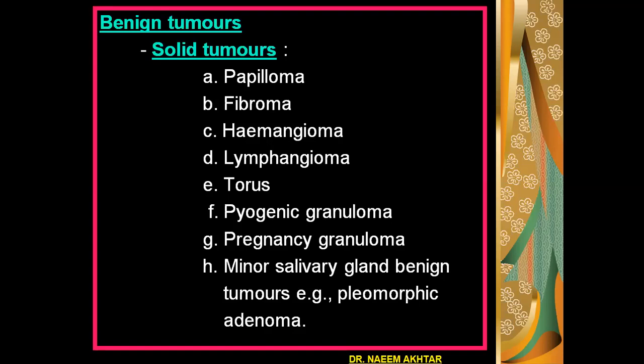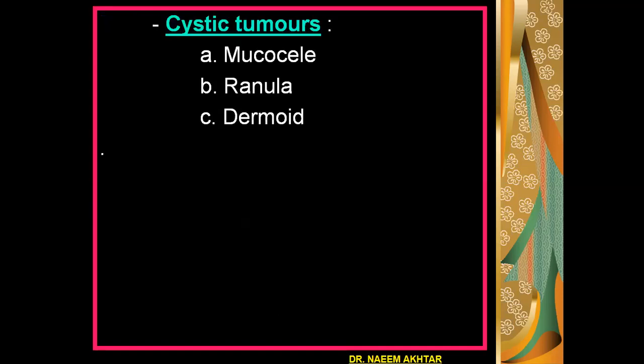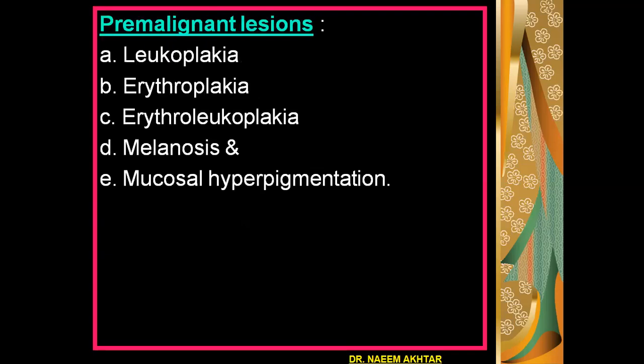The solid benign tumors are papilloma, fibroma, hemangioma, lymphangioma, torus, pyogenic granuloma, pregnancy granuloma, and minor salivary gland tumors — for example, pleomorphic adenoma. The cystic tumors which appear in the oral cavity are mucocele, ranula, and the dermoid.